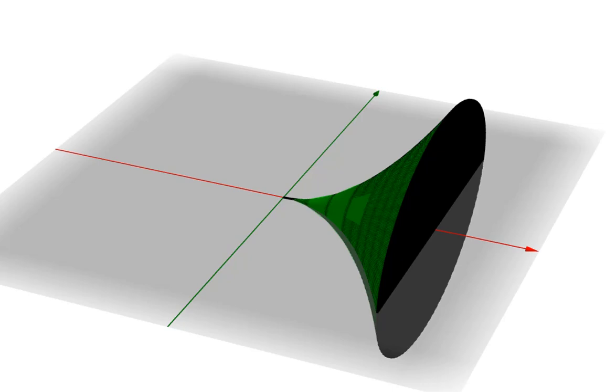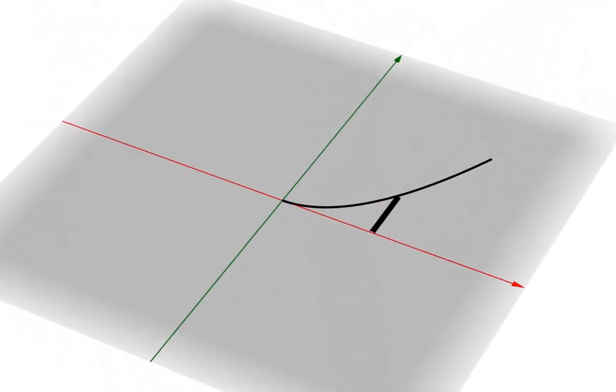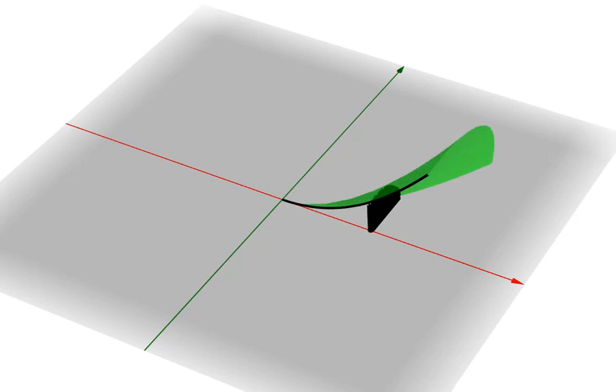Before we answer that, let's formulate an easier question. If we spin a thin bar around the x-axis at the same time that we spin the graph, what shape does that make? And what's the volume of that shape?